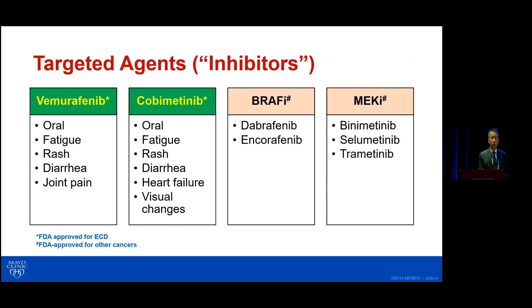The next couple of slides cover side effects of these treatments. The targeted agents are what we call inhibitors. There are two now FDA-approved: vemurafenib for BRAF mutations, and cobimetinib for non-BRAF mutations and also for patients who cannot tolerate vemurafenib. Both are oral drugs. Vemurafenib's trade name is Zelboraf; cobimetinib is Cotellic.